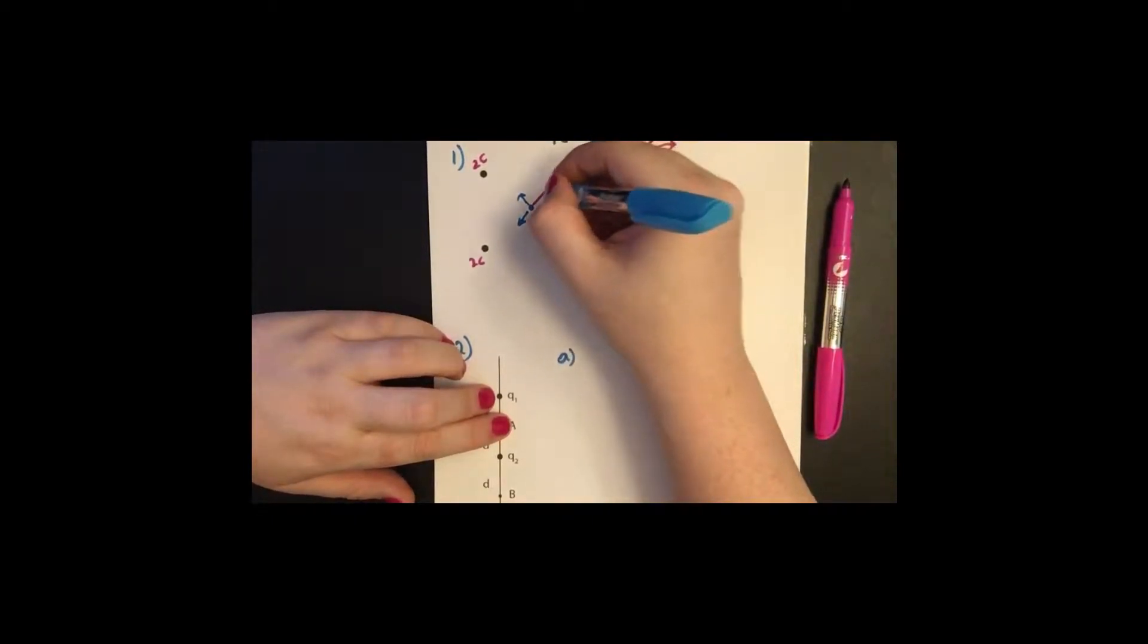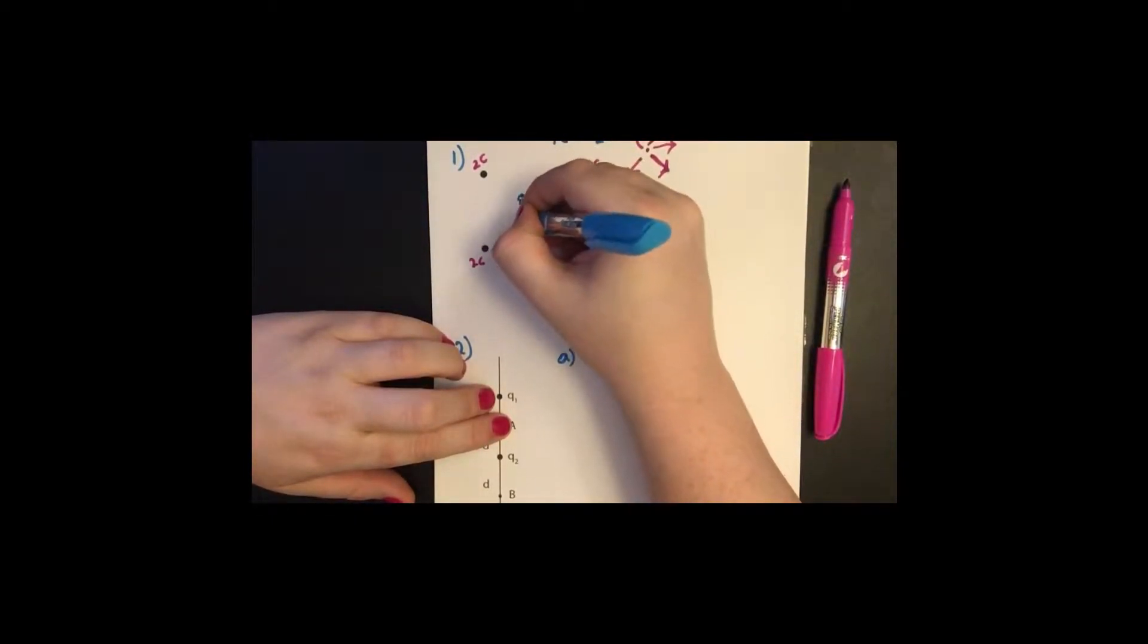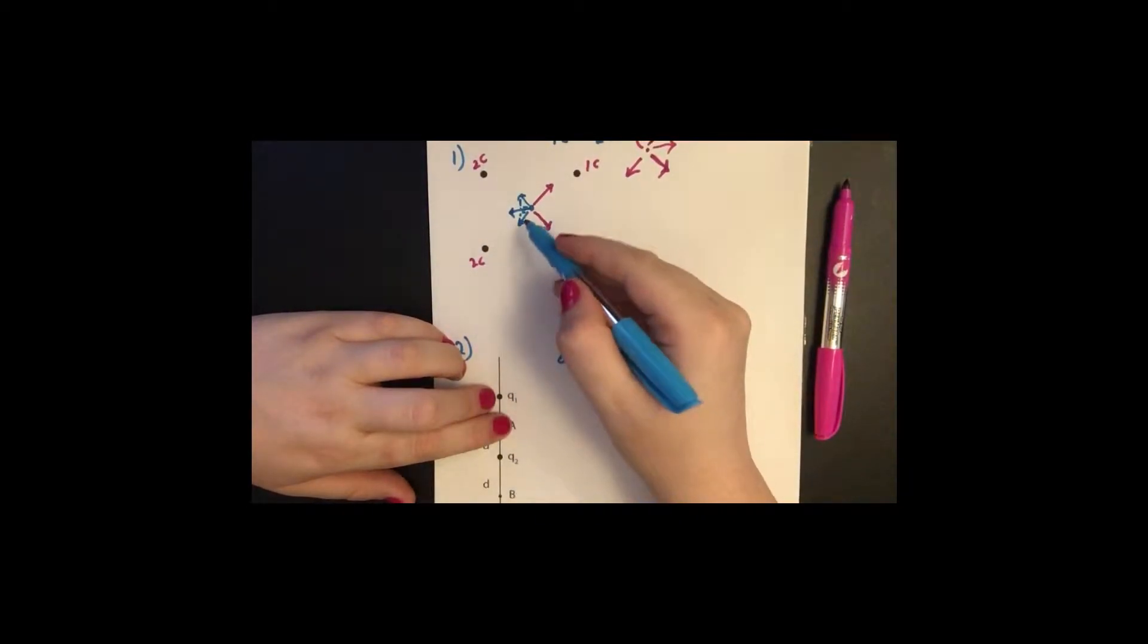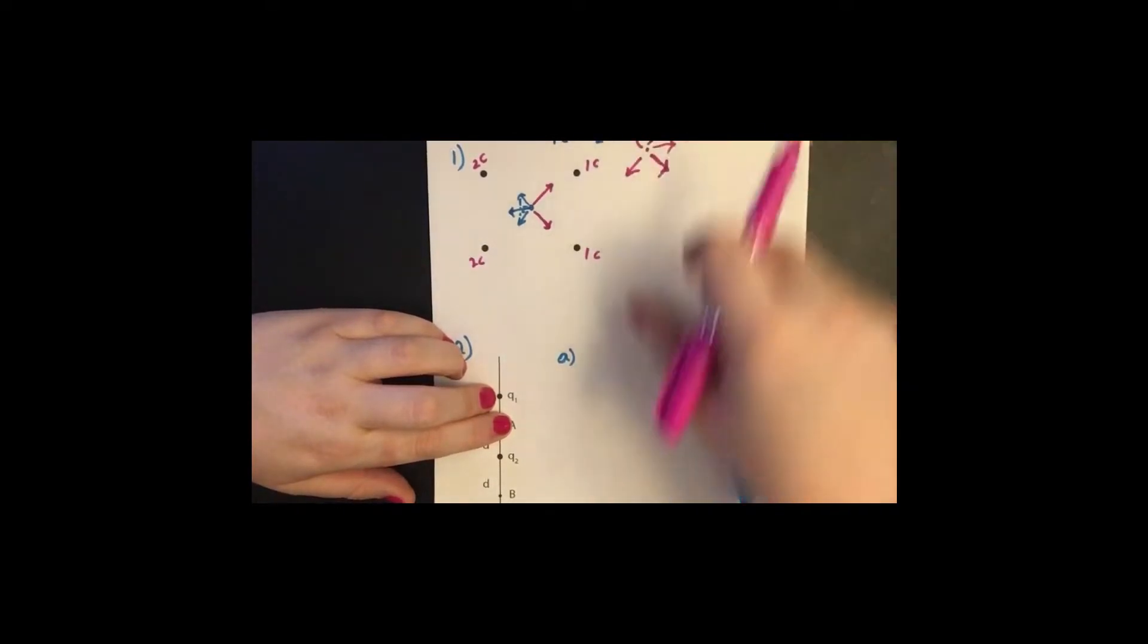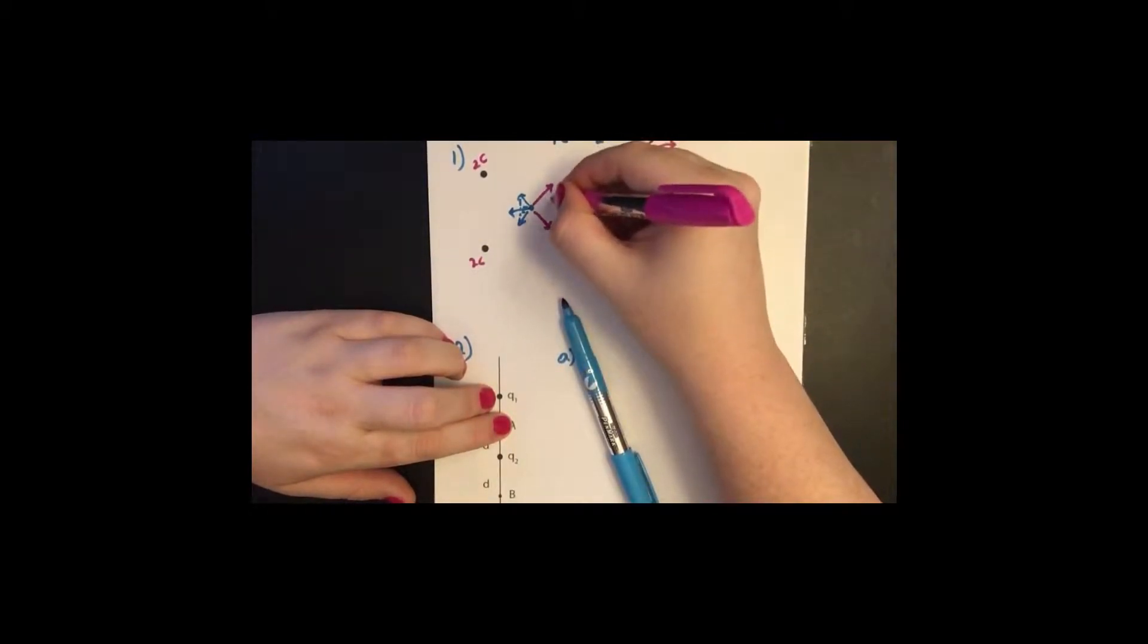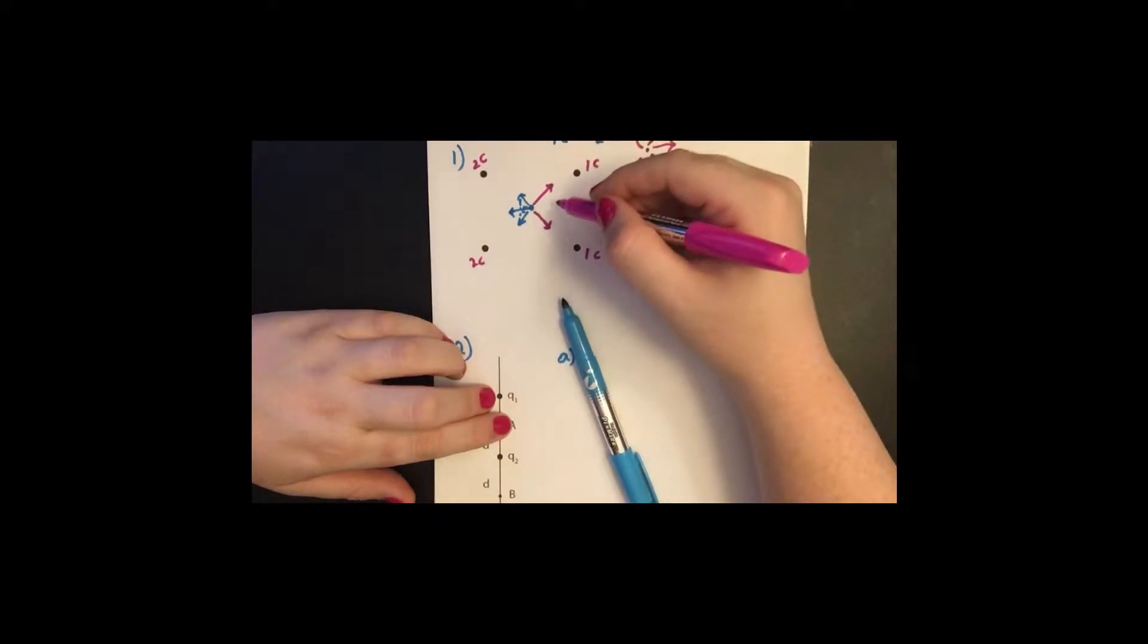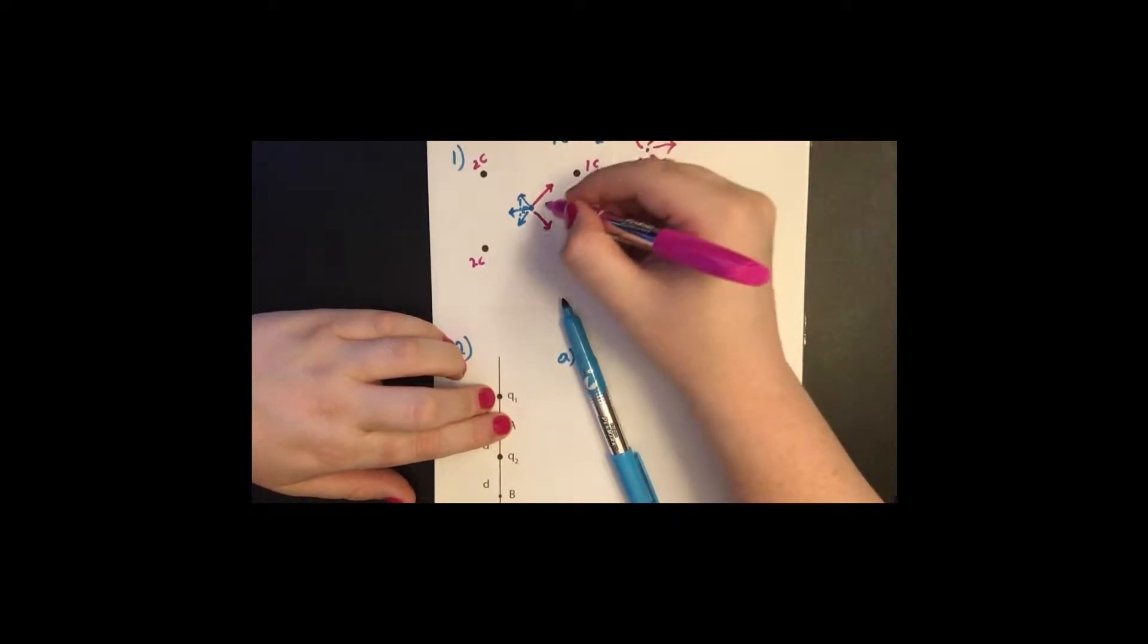We see that the vertical components of these two charges cancel. One is going up, one is going down. So it has a net from the one coulomb to the left. From the two coulombs, once again, the vertical components cancel because they have the same vertical components of their fields, but in opposite directions. So it has a net to the right.